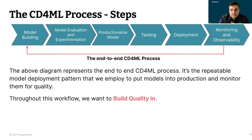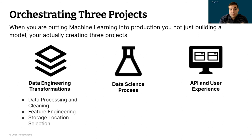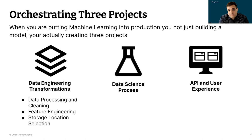There are three parts to this: the data, the model, and the API code. What makes MLOps and CD4ML different is that you're orchestrating three distinct projects at the same time: data engineering transformations, the data science process, and the API and user experience. Data engineers handle data processing, cleaning, and feature engineering — creating new features that data scientists or the API may need — and deciding the best format and location to store data, whether parquet, relational database, NoSQL, etc.